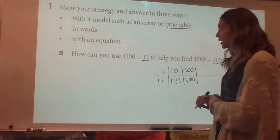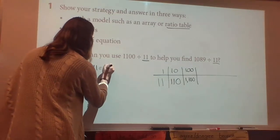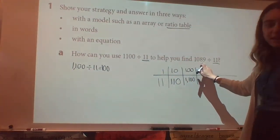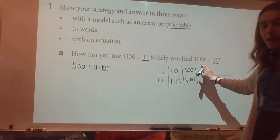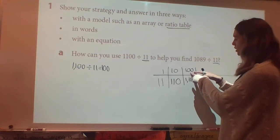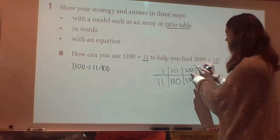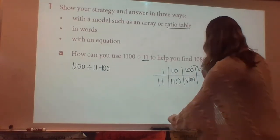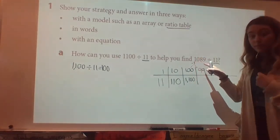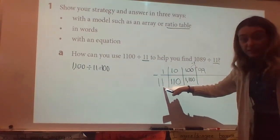Now that we know 1100 divided by 11 equals 100, I can put that over here as one of my equations. Now, how does that have anything to do with 1089 divided by 11? Well, 1089 is a little bit less than 1100. So what if we did one less than 100? What if I try 99 times 11? All I did was subtract one from the top. I'm going to use a different color for that. If I subtract one from the top, then I have to subtract 11 from the bottom.